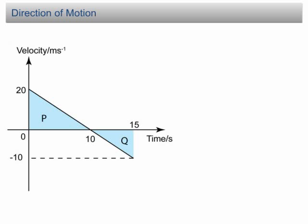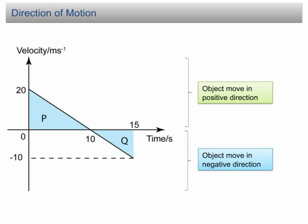In the velocity time graph above the x-axis, the velocity is positive shows that the object was moving in the positive direction. Below x-axis, the velocity becomes negative shows that the object moves in negative direction. At the point where the velocity changes from positive to negative or negative to positive, the velocity is zero.